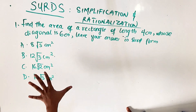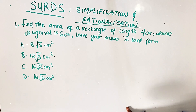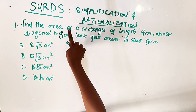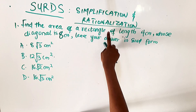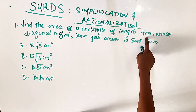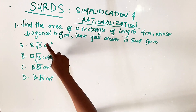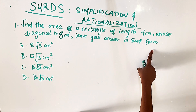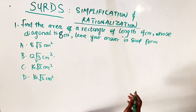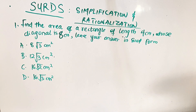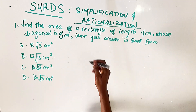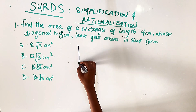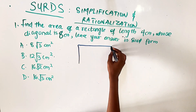The first question says: find the area of a rectangle of length four centimeters whose diagonal is eight centimeters, and leave your answer in surd form. Let's start by drawing out this rectangle. I have my rectangle here.